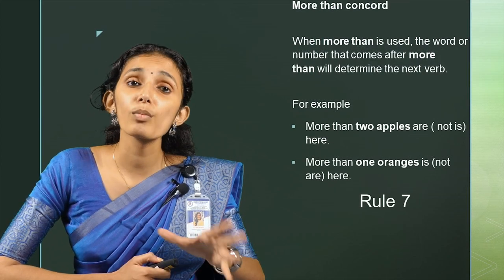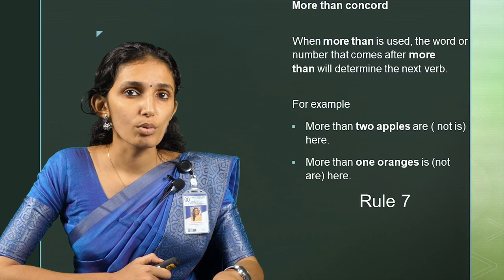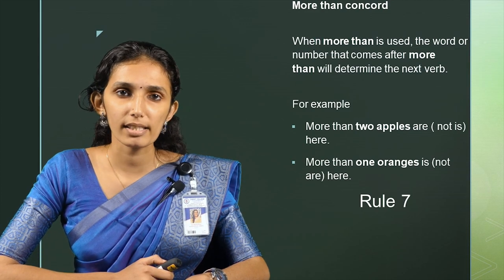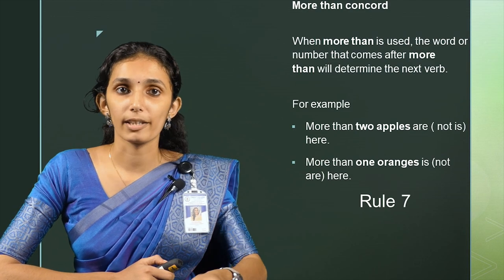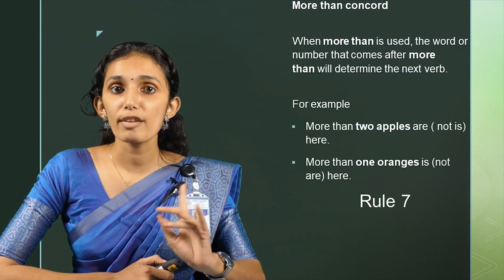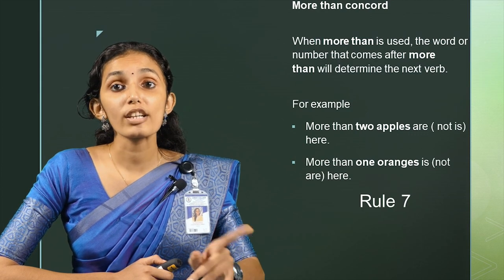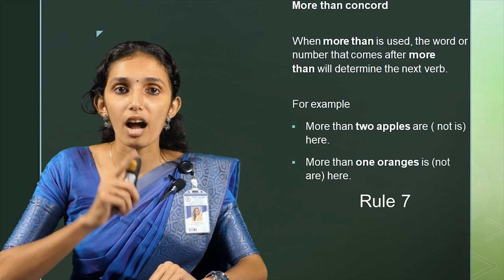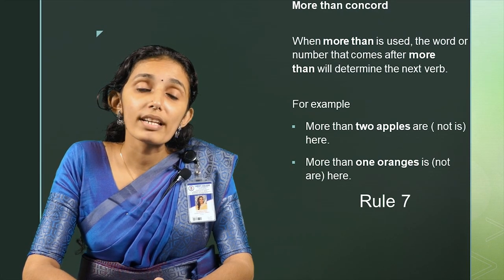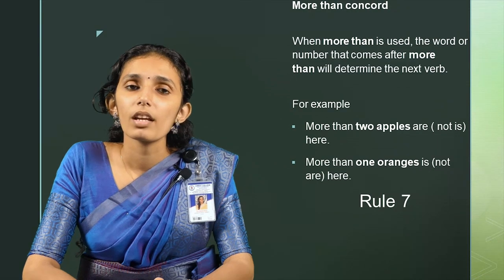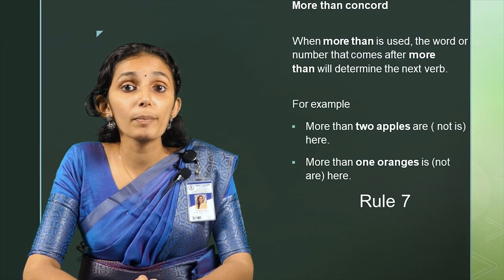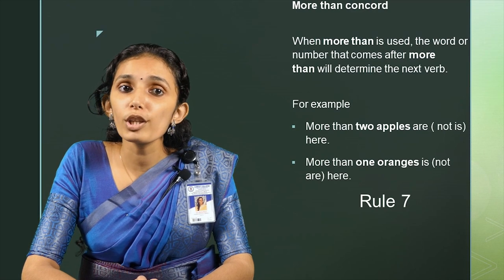Rule number 7: More than concord. When 'more than' is used, the word or number that comes after will determine the verb. For example, 'More than two apples are here' — two attracts 'are.' But 'More than one orange is here' — one attracts 'is.' Do not think that because 'more than one' means at least two that you will use a plural verb; you will use a singular verb.